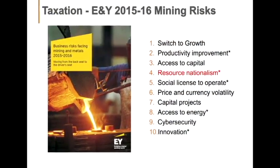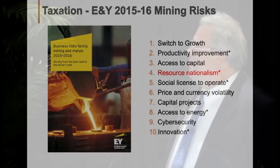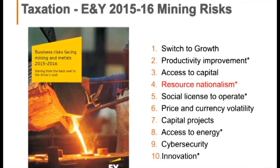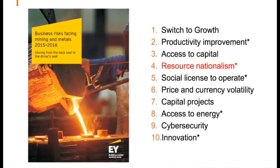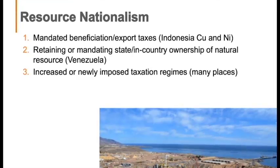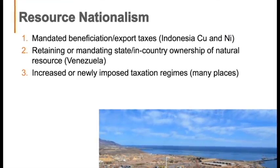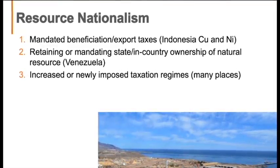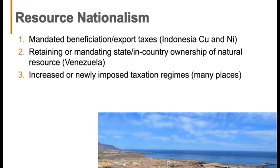Another item is taxation. Income tax is not included in costs — which is beyond me why it isn't. It's always in the top 10, top 5 risks. This Ernst & Young list calls it 'resource nationalism,' because there are three types: mandated export taxes like those found in Indonesia, in-country ownership requirements like Venezuela imposed, or outright nationalization, and increased or newly imposed taxation regimes. This last type affects your cash costs especially.